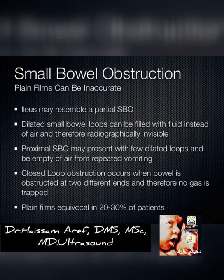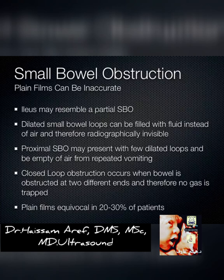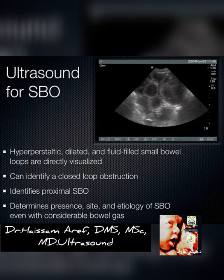With small bowel obstructions, we say get an x-ray to see the air-fluid level. Unfortunately, x-ray needs air and fluid together, and a patient who's vomiting a lot may vomit all the air so there's just fluid — you miss those on x-ray. Closed-loop obstructions, where bowel is twisted on both ends, also classically miss on x-ray. Ultrasound is really good at picking up both scenarios. It has much better test characteristics than x-ray, though not as good as CT — but at the bedside we can get the diagnosis of bowel obstruction pretty easily.